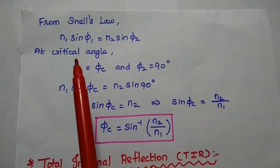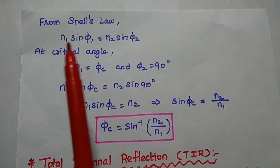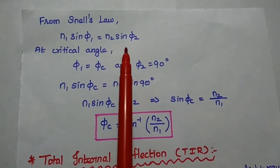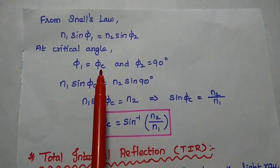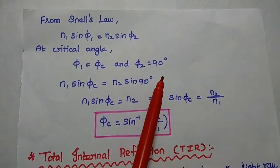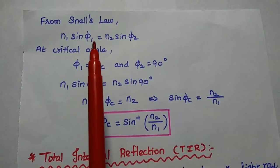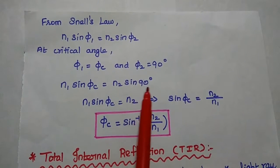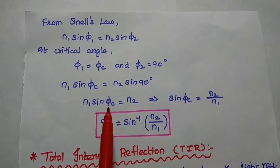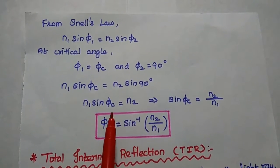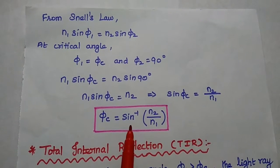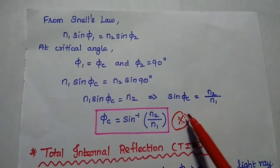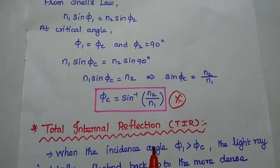Next we are going to derive the critical angle using Snell's law. Snell's law states that N1 sin(phi1) = N2 sin(phi2). At the critical angle, phi1 becomes phic and phi2 equals 90 degrees. Substituting these values into Snell's law, we get N1 sin(phic) = N2 sin(90°). Since sin(90°) = 1, we get N1 sin(phic) = N2, and therefore phic = sin⁻¹(N2/N1). This is the formula for the critical angle, which we can use to solve problems.